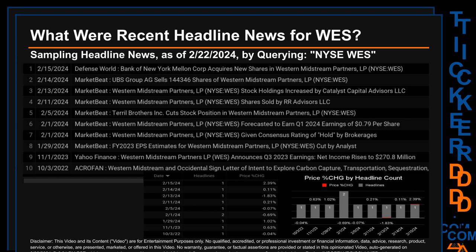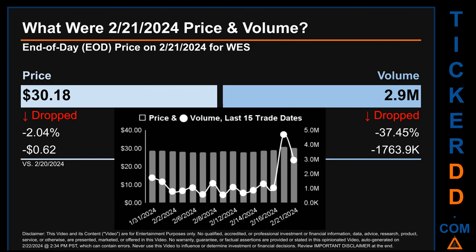The latest publication date of Thursday, February 15th, 2024 was actually the day with the highest percentage change in price — it saw a price jump of 2.39%. Tuesday, February 13th, 2024 was the day with the highest percentage change comparing opening versus closing price, seeing a drop of minus 1.83%, when WES opened at $28.41 and closed at $27.89. There was one found headline when Market Beat published: 'Western Midstream Partners LP stock holdings increased by Catalyst Capital Advisors LLC.'